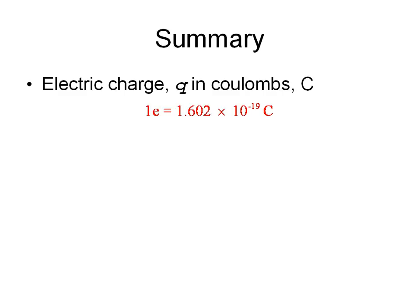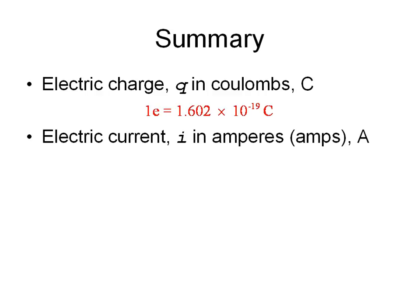One electron has a charge of 1.602 times 10 to the negative 19 Coulombs. Electric current we represent with the letter I. Measure it in Ampere or Amps.